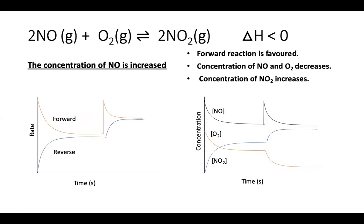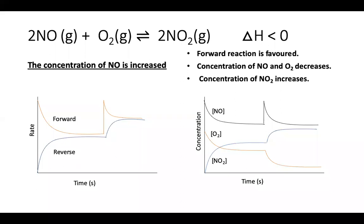Look at this equation: nitrogen monoxide (NO) plus oxygen (O₂) gives nitrogen dioxide (NO₂), and ΔH is less than zero, meaning the forward reaction is exothermic. In terms of moles, there are three moles on the reactant side (2 NO + O₂) and two moles on the product side (2 NO₂).